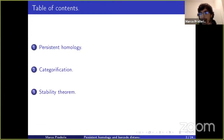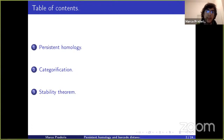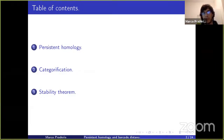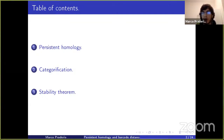I will start by defining what persistent homology is, then go on to define the categorification of persistent homology — generalizing it to category theory — and use tools from category theory to prove what is known as the stability theorem, which is one of the most important theorems of persistent homology. I will assume most of you know about homology and category theory.